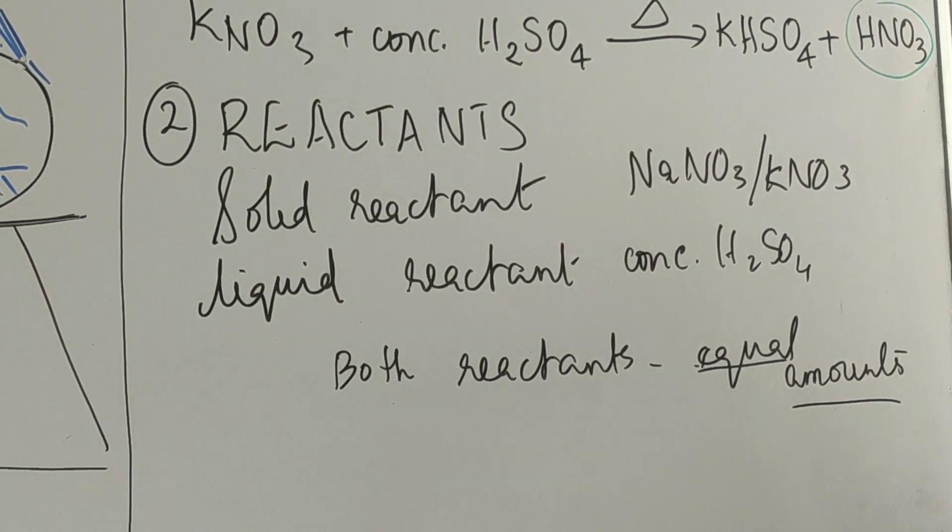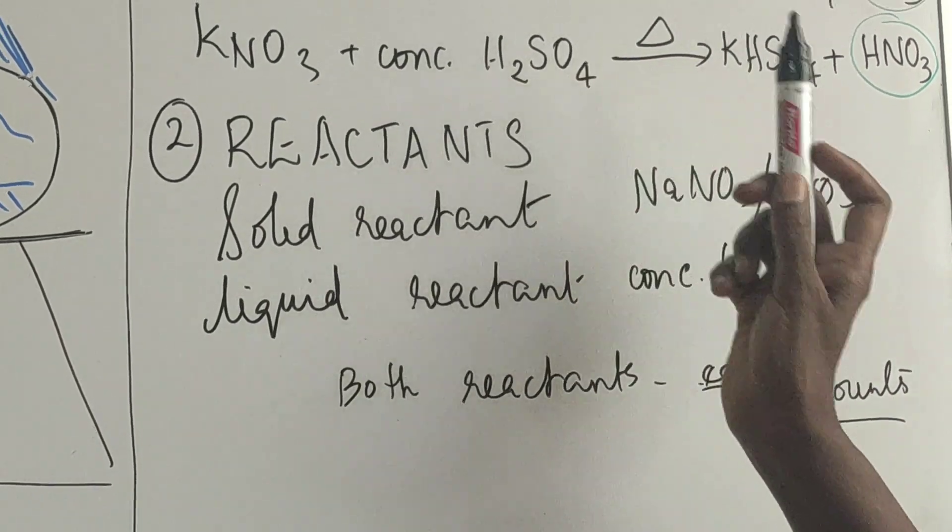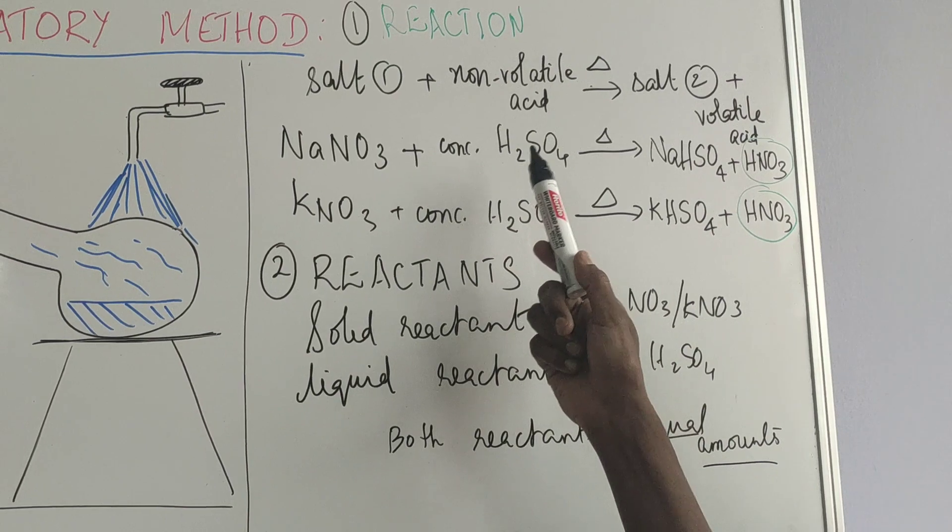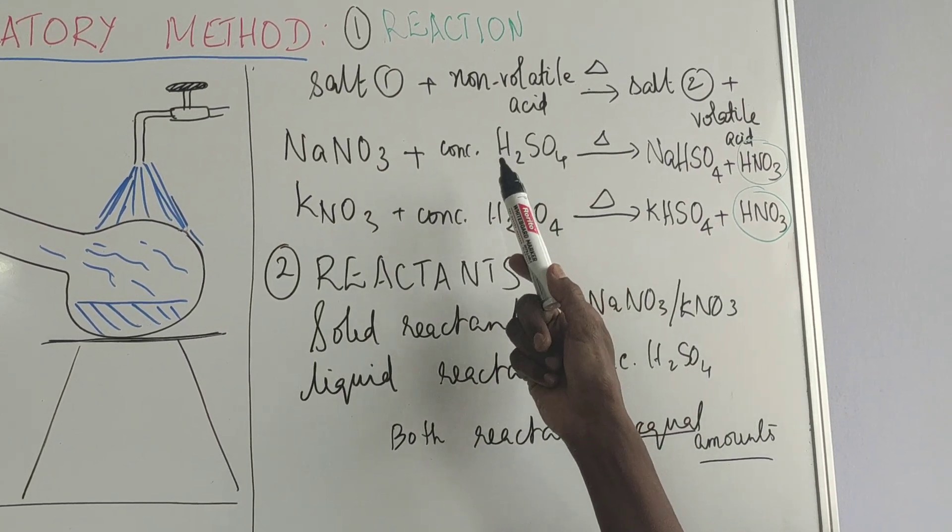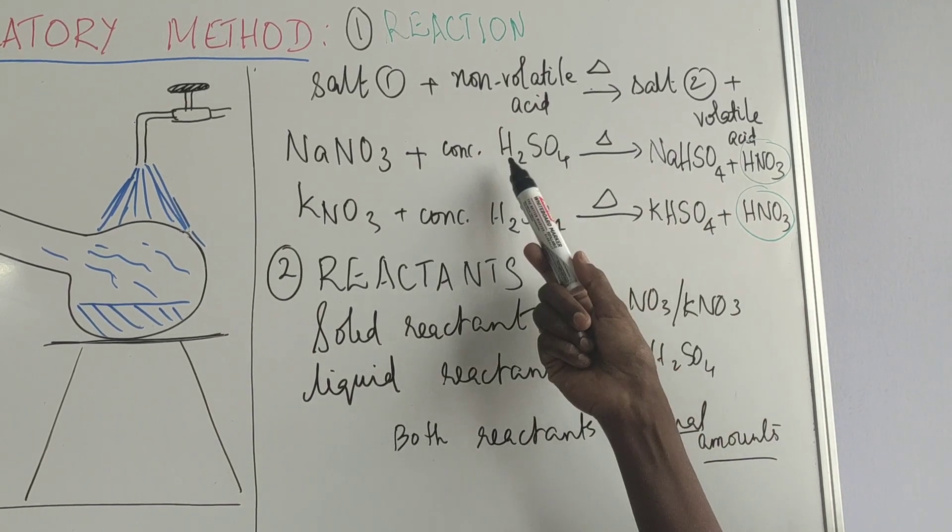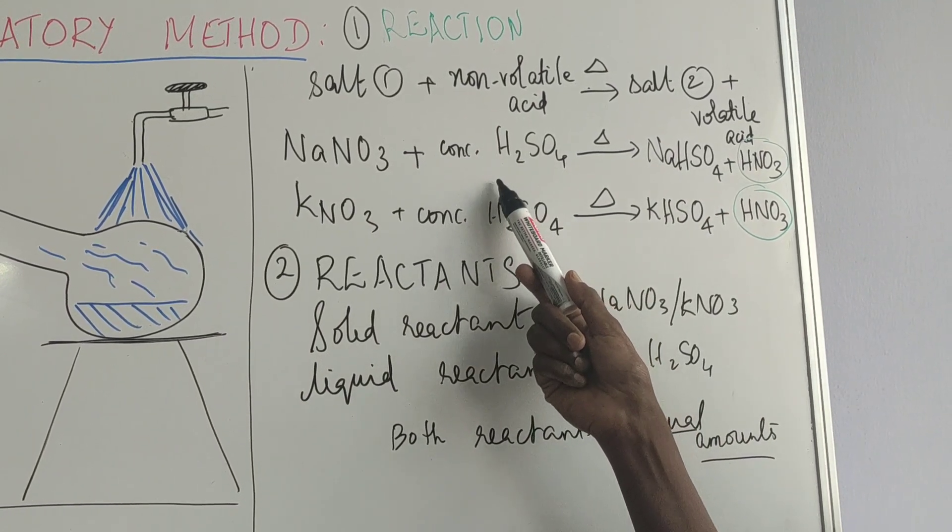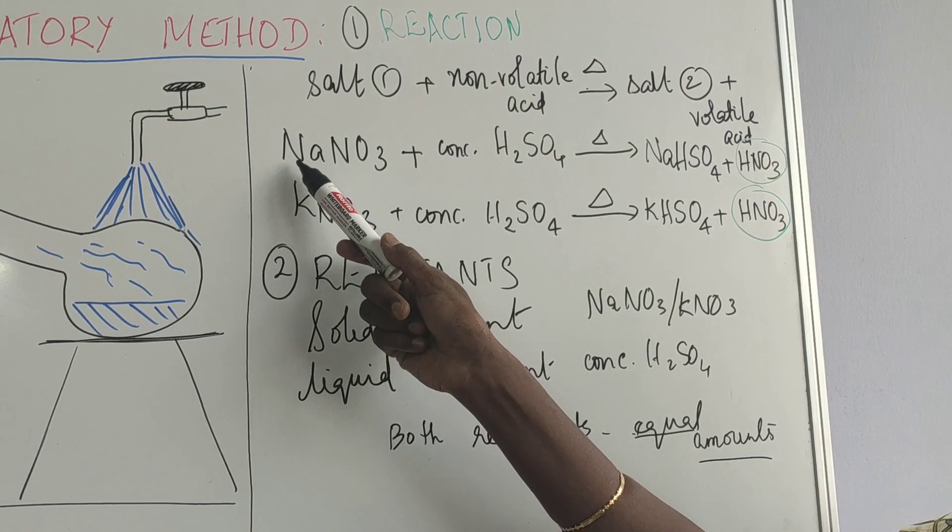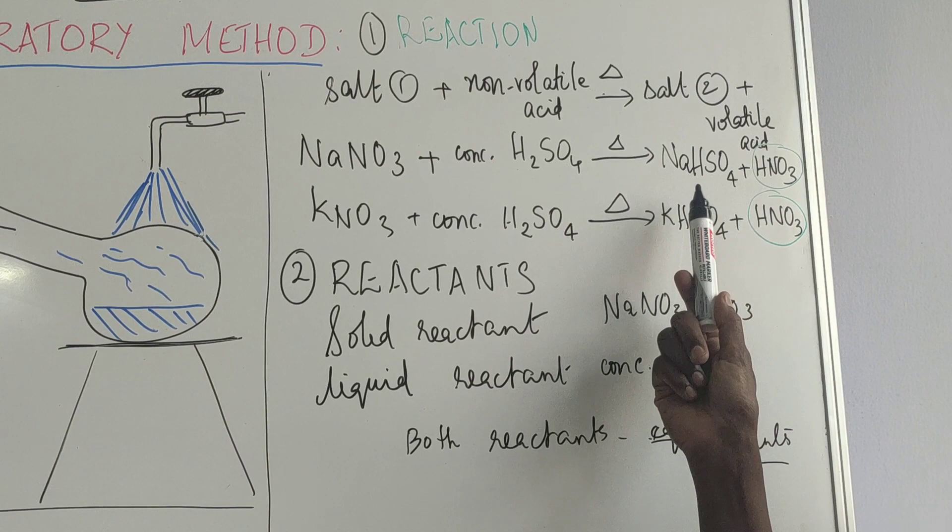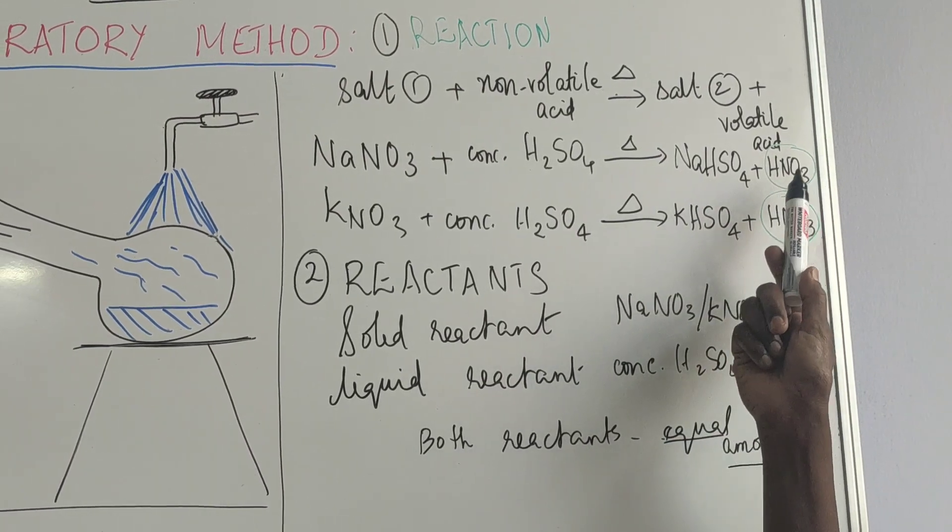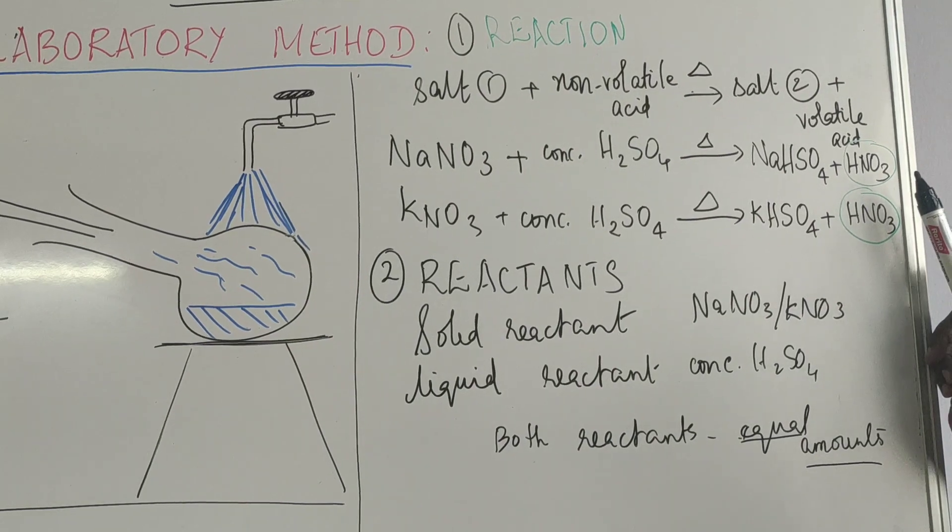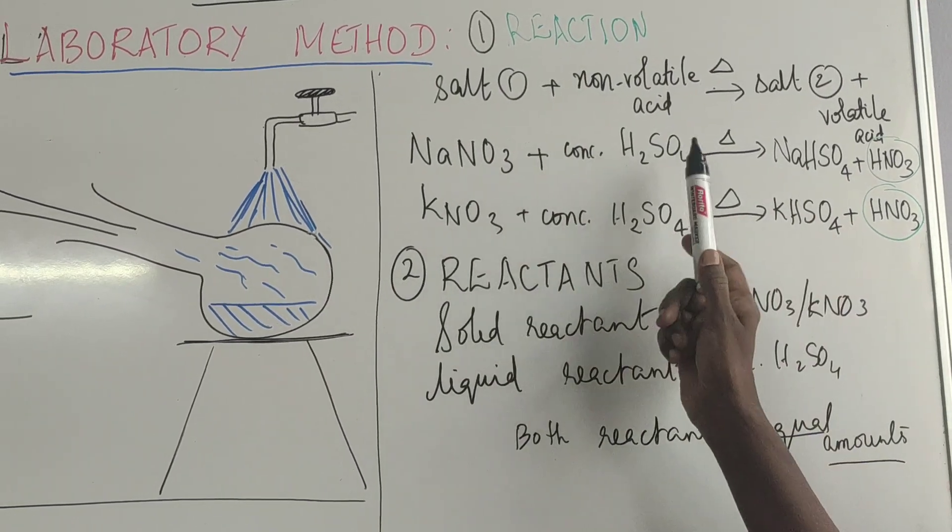Why do we need to use it in equal amounts? If we look at the reaction, see, there are two hydrogen atoms in sulphuric acid but only one hydrogen is used for nitric acid. So if we are going to use only half of it or twice, if sodium nitrate is going to be twice, then the amount of nitric acid formed will be difficult. So we need 1 is to 1 ratio in order to form nitric acid from these two reactants.